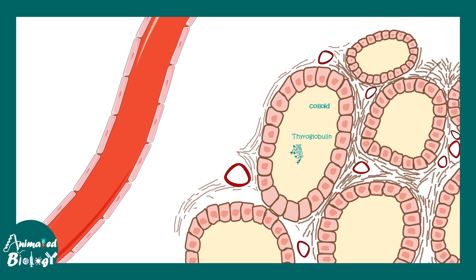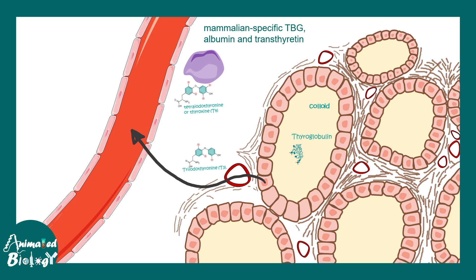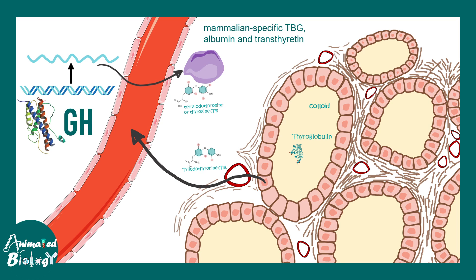Growth hormone also indirectly affects thyroid hormone. Thyroid hormone is secreted into the blood and carried by a specific protein known as TBG (thyroid binding protein). Growth hormone promotes the production of TBG, thereby making thyroid hormone available throughout the body. Since thyroid hormone regulates many aspects of metabolism, it is no wonder that excess growth hormone causes widespread metabolic problems.